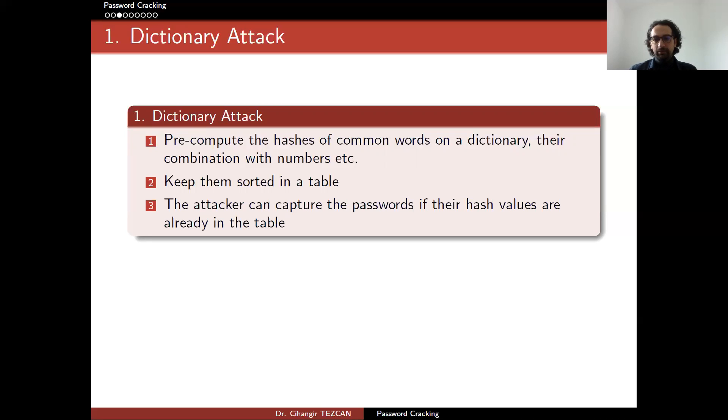So the attacker can capture the password if their hash values are already in the table. So assume that you have a database consisting of a lot of hashes. You can also sort them. And now you have your initial dictionary, which you created, which are gigabytes of data. Then you capture hashes of passwords from a database. Then you compare them. So if there are any matches, since you already know the input because you created the dictionary yourself, this way you can obtain the password itself.